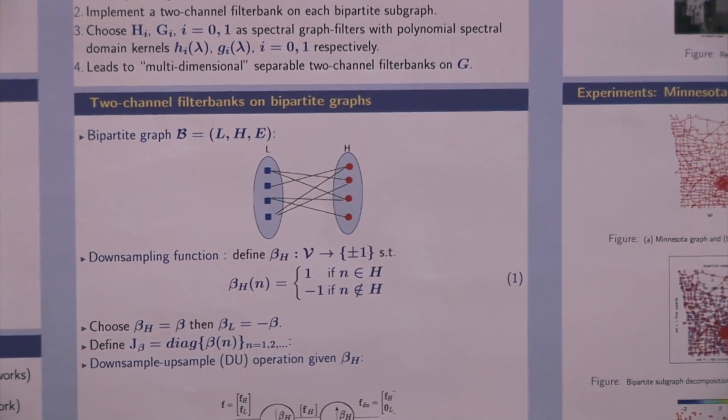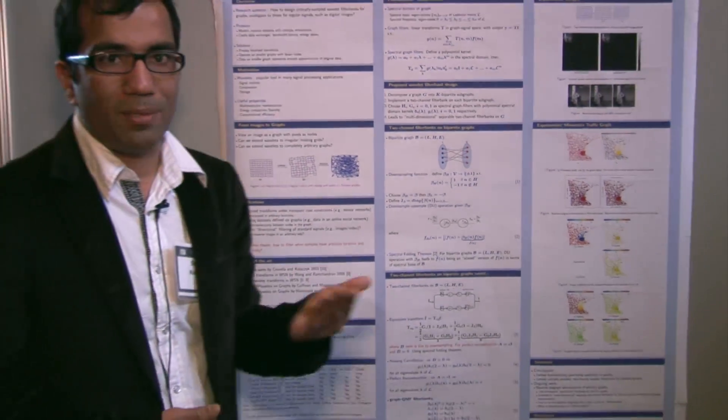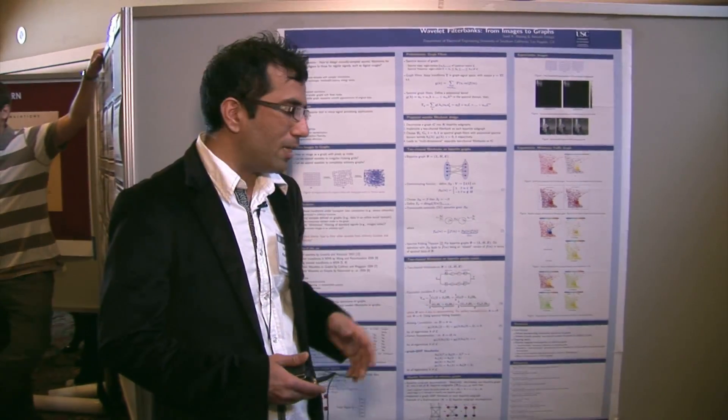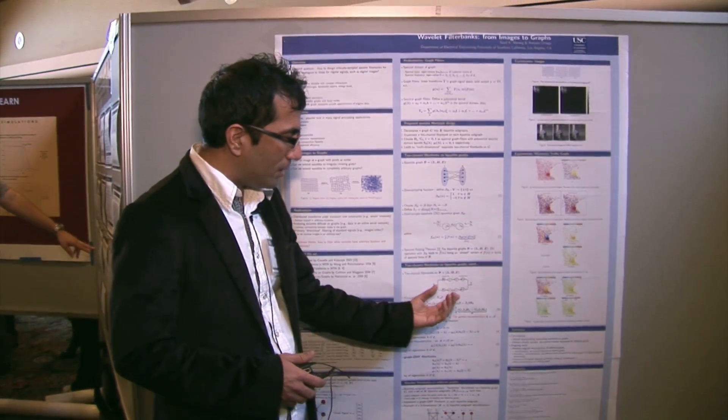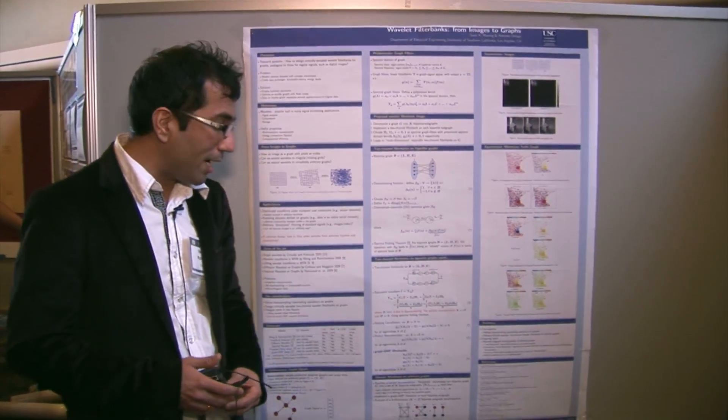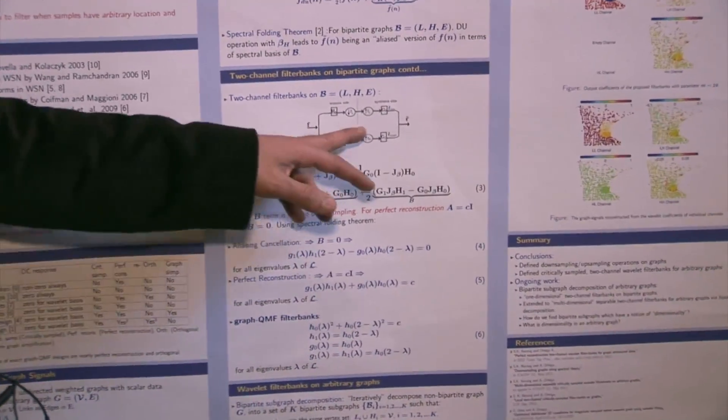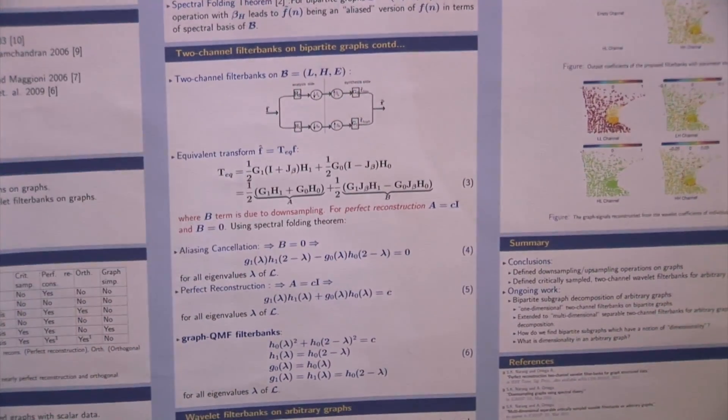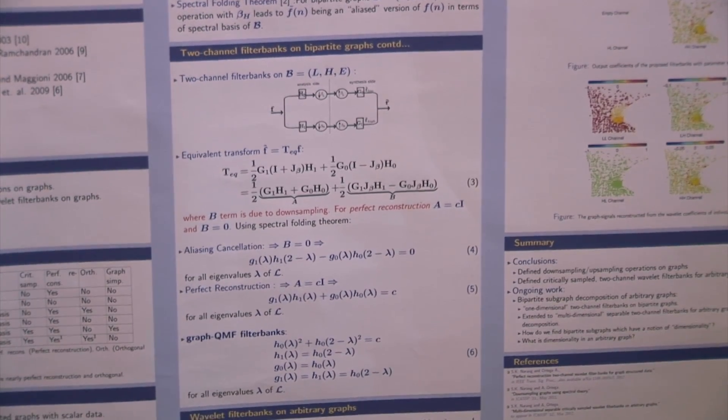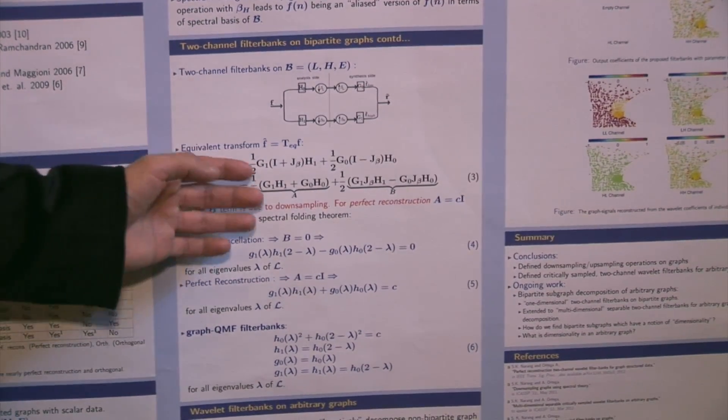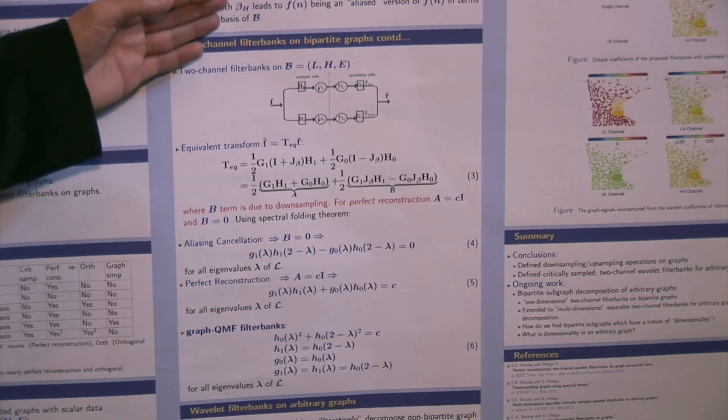What we prove for bipartite graphs is a spectral folding theorem, which is analogous to the frequency folding theorem that occurs when we downsample the regular signal by two. Using that theorem, we implement these two-channel wavelet filter banks on the graph. The filter banks look similar to the standard two-channel filter bank, except that the downsampling, upsampling operations are now replaced by downsampling, upsampling on bipartite graphs.